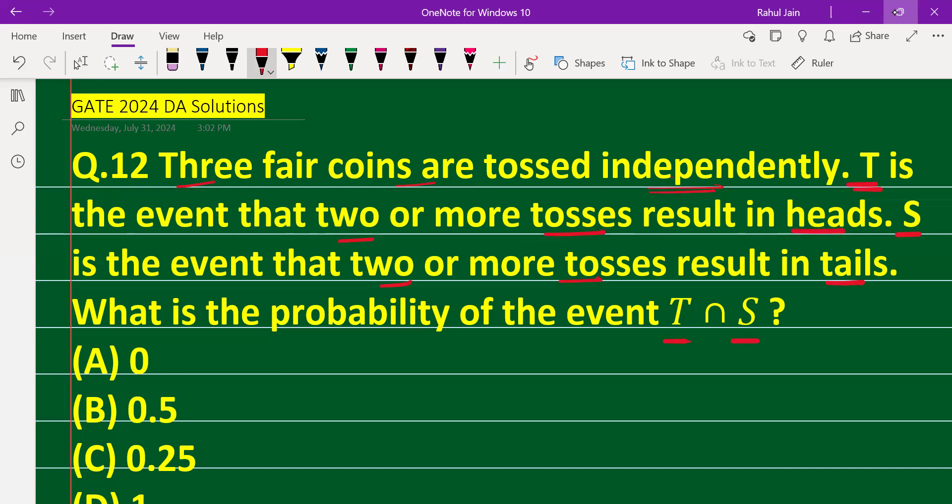If three fair coins are tossed, they can have heads or tails. Now, T is an event in which two or more tosses result in heads.